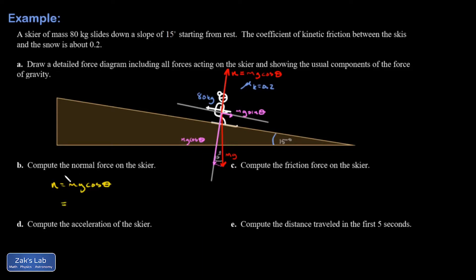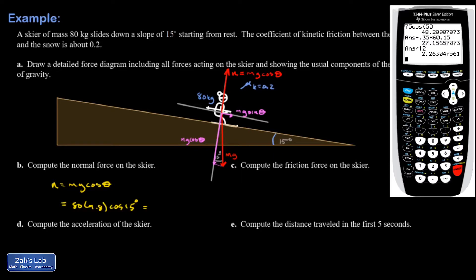And maybe I'll just go ahead and put the numbers in right now. So it's 80 times 9.8 cosine 15 degrees. Go ahead and pop up my calculator, which I think is now set in degrees. I was doing some calculus problem yesterday and it got set in radians. I got 757.3.